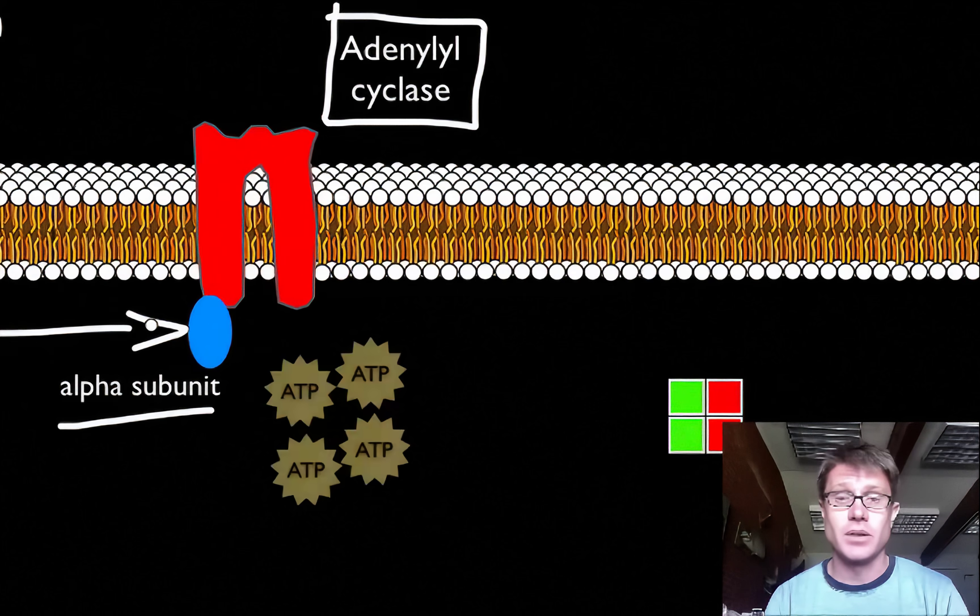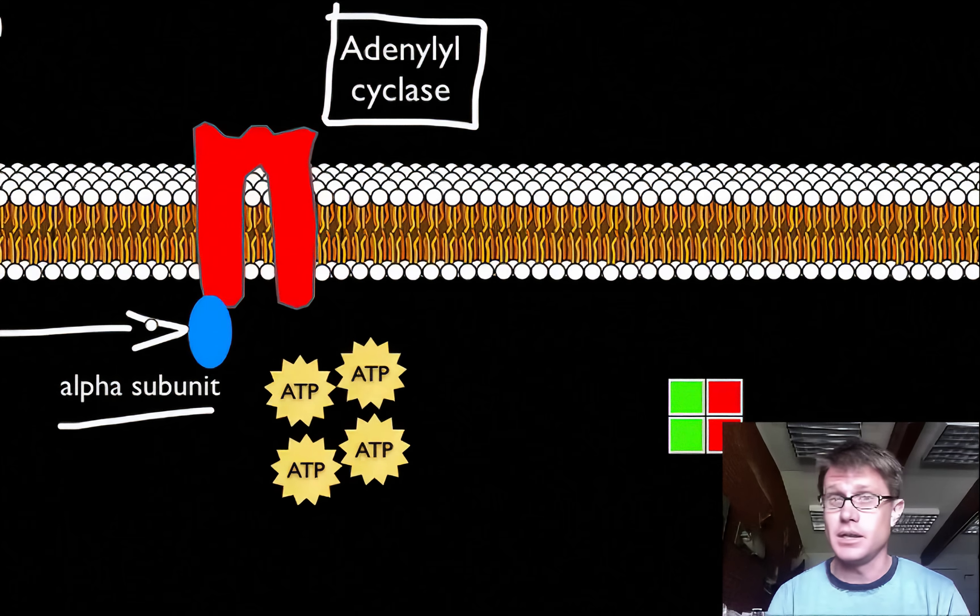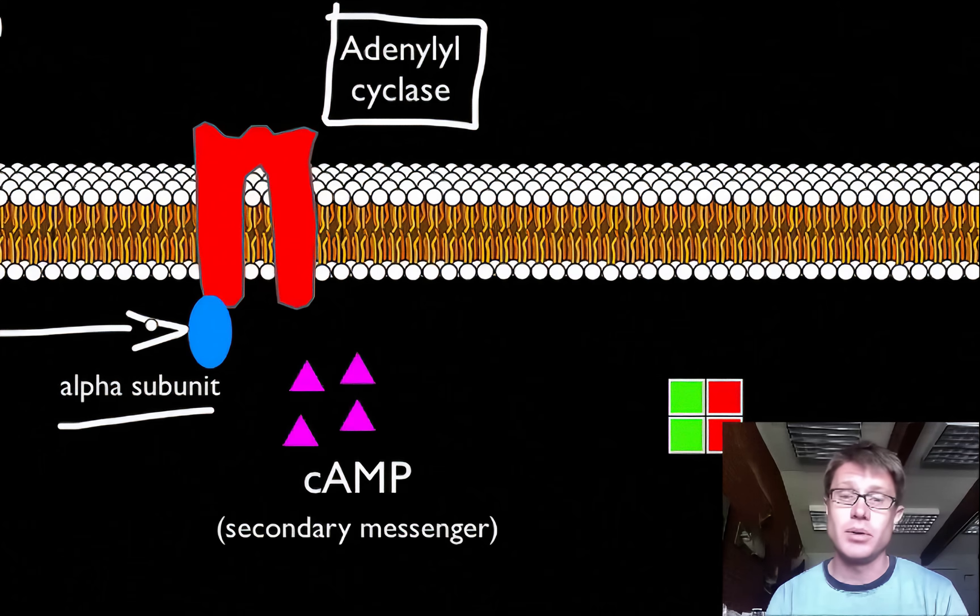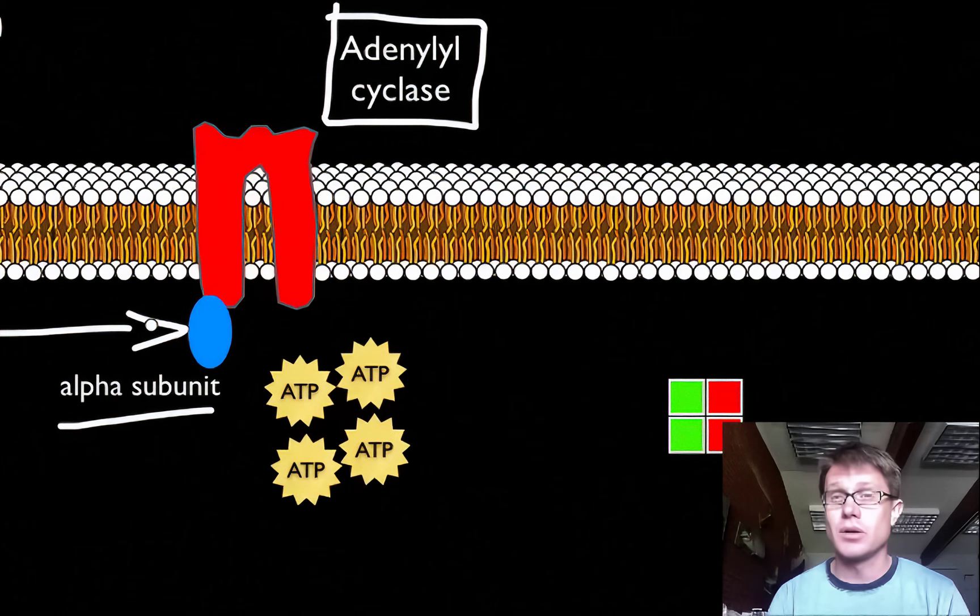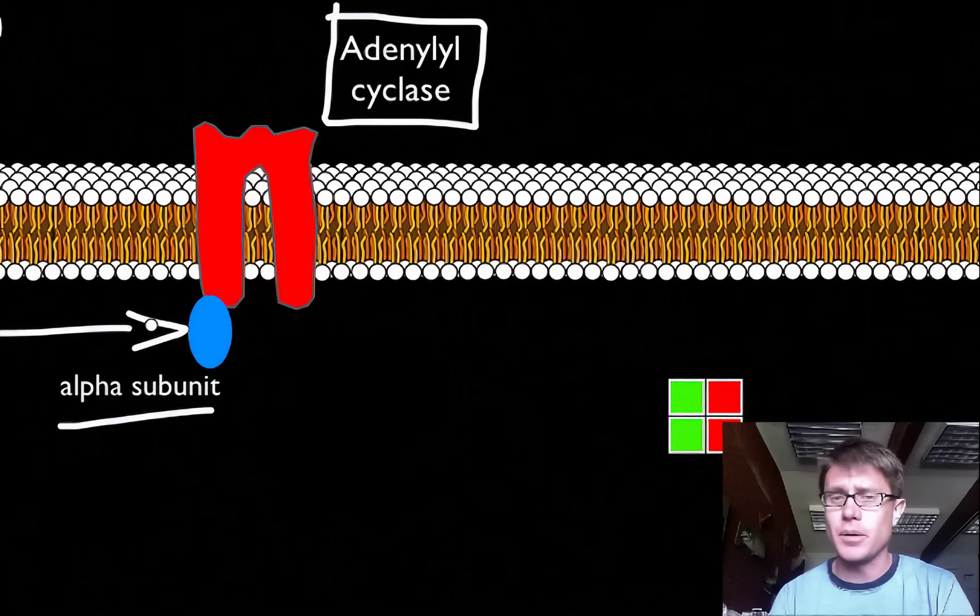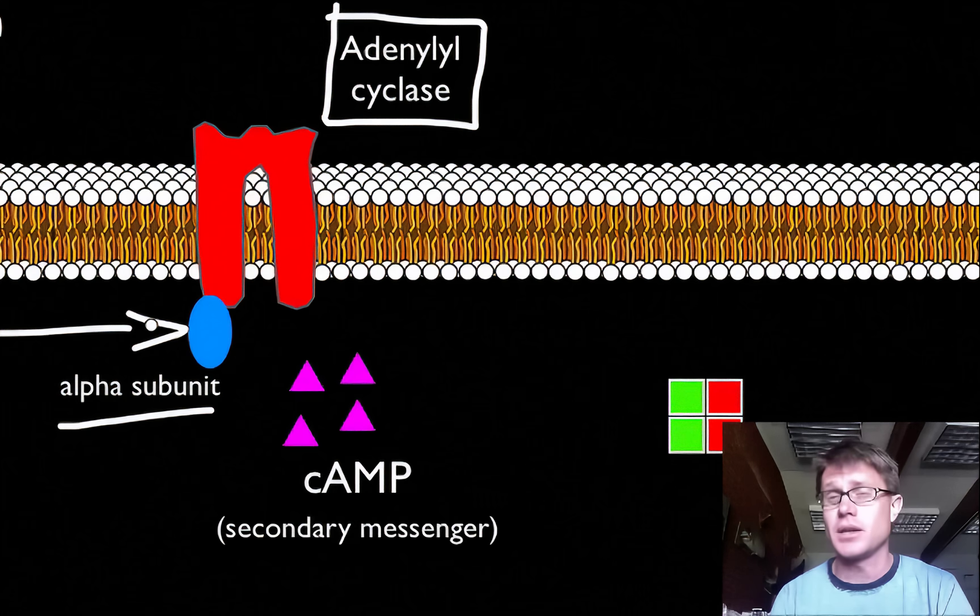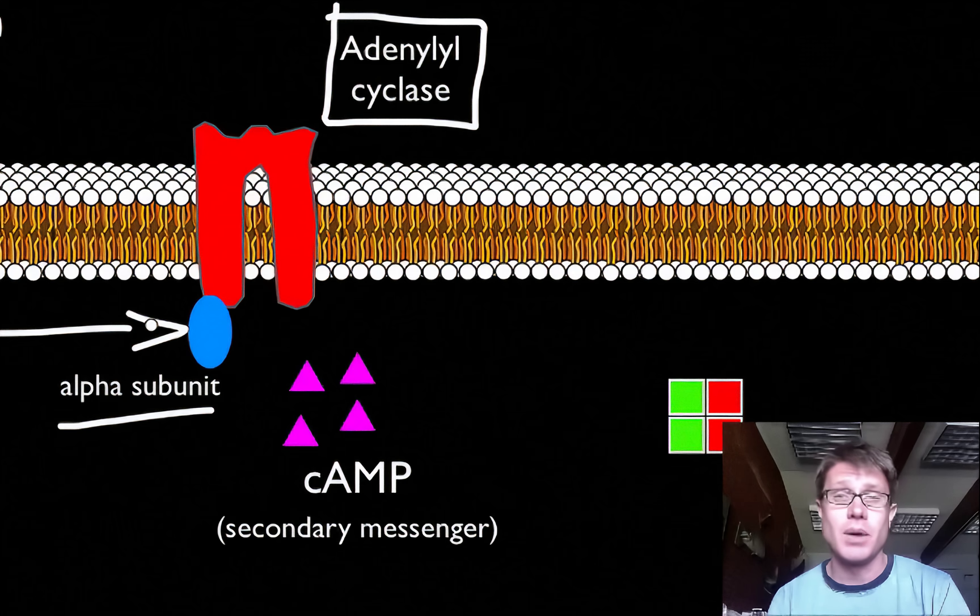And in this case what it does is it converts ATP, adenosine triphosphate, into cyclic AMP. Or we sometimes call this cAMP. Now what is ATP? Remember we know that that has three phosphates attached on the outside. It carries energy mostly in cells. We're very familiar with how ATP can be converted to ADP when it drops off one of those phosphates. But it can also drop off two phosphates. And that's what happens in this case. So now it becomes AMP or monophosphate.